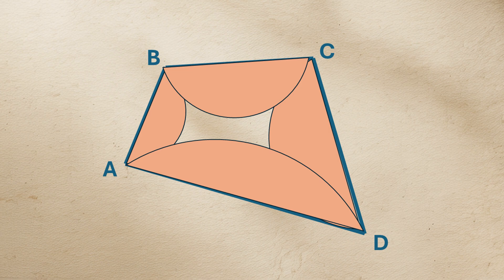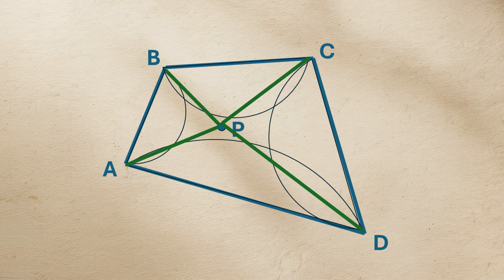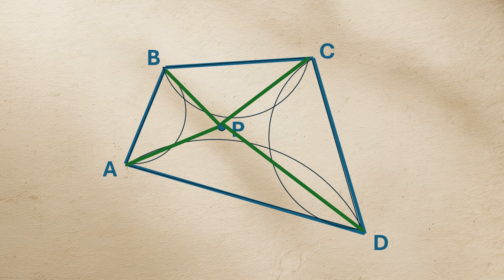We prove this by contradiction. Assume point P lies inside ABCD, but outside all four semicircles. A point outside a circle subtends an acute angle to the diameter endpoints.